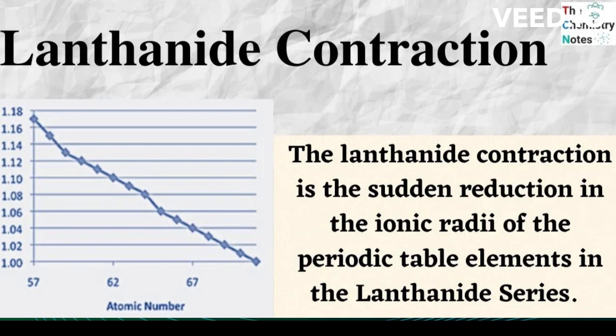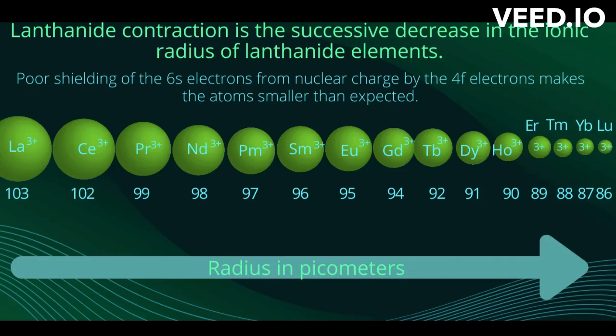Nevertheless, the effect of lanthanide contraction results from the poor shielding of nuclear charge by 4F electrons. The 6s electrons can be drawn towards the nucleus, hence resulting in a smaller atomic radius. For each consecutive atom, the nuclear charge is more positive by one unit, accompanied by a corresponding increase in the number of electrons present in the 4F orbitals surrounding the nucleus.